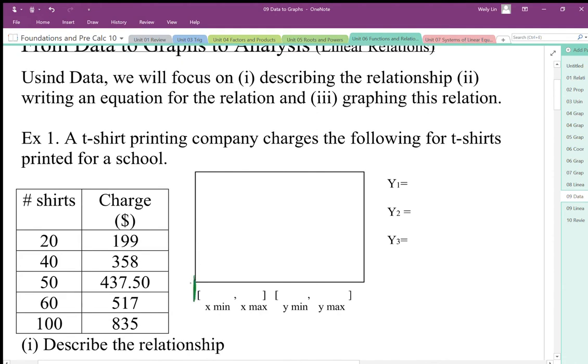The x min means the left edge of that graph. The x max, so this is x min would be the left edge, x max would be the right edge.